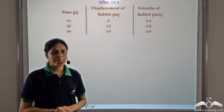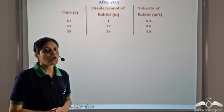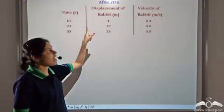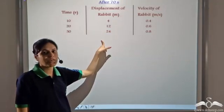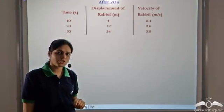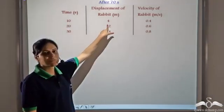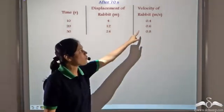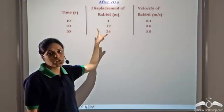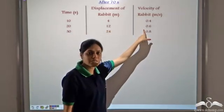The rabbit slept during the race and woke up at t equal to seventy seconds. After waking up, he started running again. This is the time taken and the corresponding displacement of the rabbit after he woke up at seventy seconds. We can calculate the velocity of the rabbit from the time taken and displacement. After ten seconds, displacement was four metres, so velocity was 0.4 metres per second. After twenty seconds, displacement was twelve metres, so velocity was twelve by twenty, that is 0.6 metres per second.